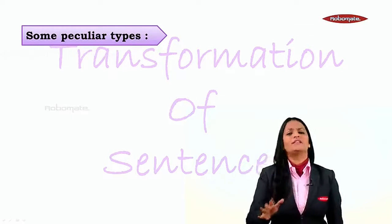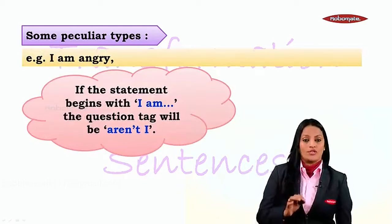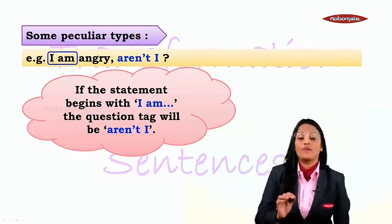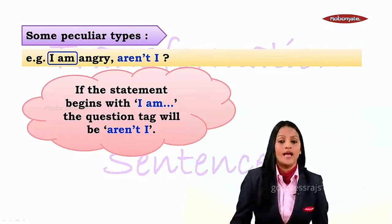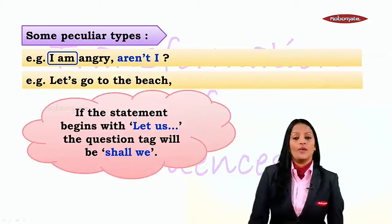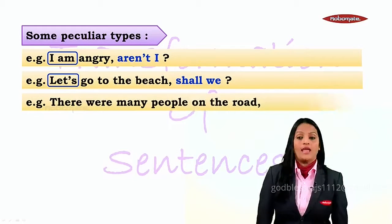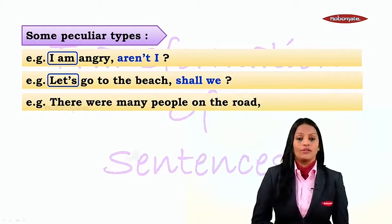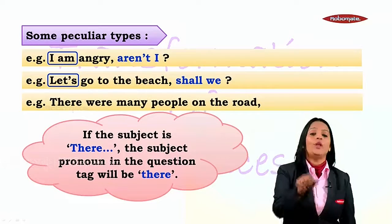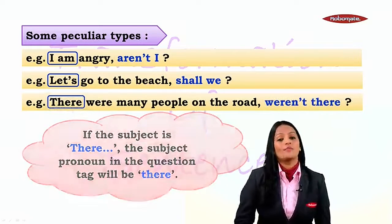Now let's see some peculiar types - some very different types of sentences. Whenever there is an 'I am' structure in the sentence, the tag is always going to be 'aren't I'. Remember, it is not 'am I', it is not 'ain't I' - it is 'aren't I'. Next: 'Let us go to the beach' - whenever the statement starts with 'let us', the question tag will be 'shall we'. And 'There were many people on the road' - whenever your subject is 'there', the subject pronoun in the tag will also be 'there', so you say 'weren't there'.